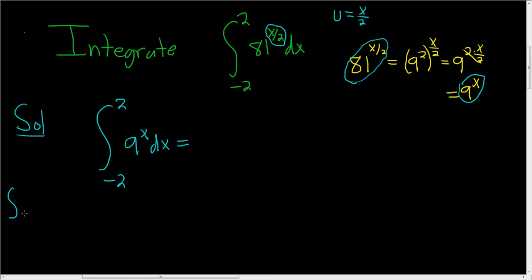So the formula for the integral of a to the x with respect to x is simply a to the x over the natural log of a plus a constant. Now this is a definite integral, so we don't have to include the constant. So this will be 9 to the x over the natural log of 9, and we're going from negative 2 to 2.